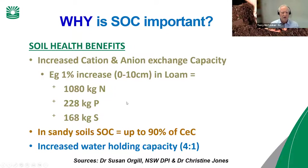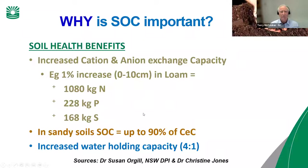In sandy soils, cation exchange capacity is largely run by soil organic carbon, so as you add more soil organic carbon, the cation exchange capacity lifts. Also, as you add carbon to a soil you're increasing water holding capacity. In round figures, if we add one ton of carbon per hectare to a soil, we will be adding the ability to hold four tons of water — which has obvious production benefits.